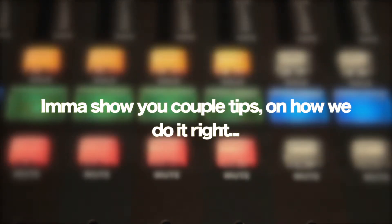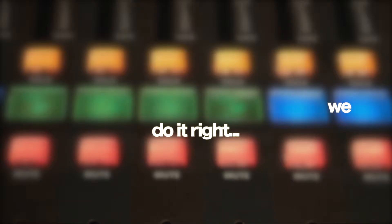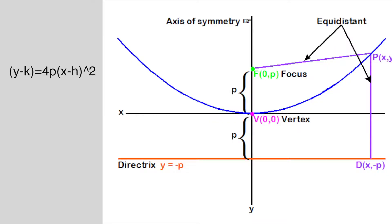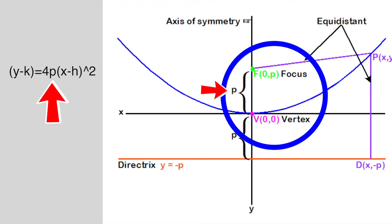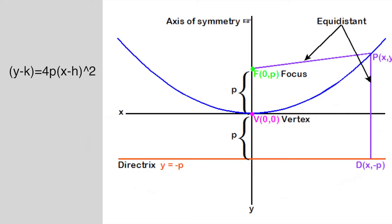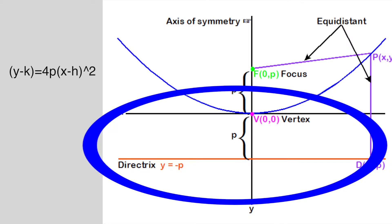I'ma show you a couple tips on how we do it right. Finding that focus isn't all that hard. Distance of P from the vertex, we dropping bars. Next thing on our checklist is thing called the directrix. If you listen you'll notice it's equal distance from the focus. Move back from the vertex with a distance of P.